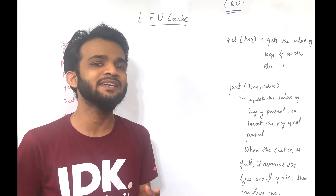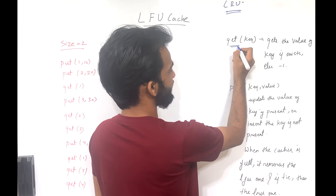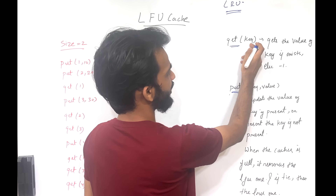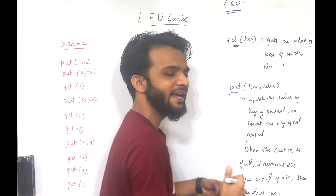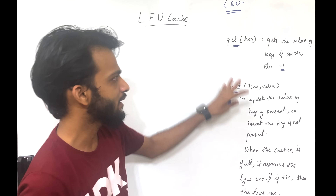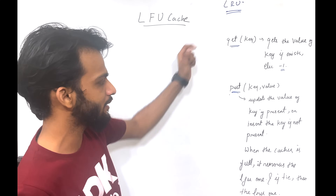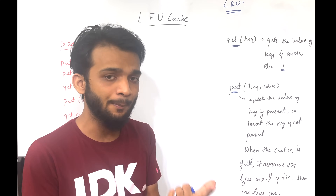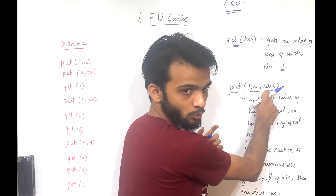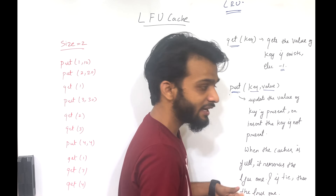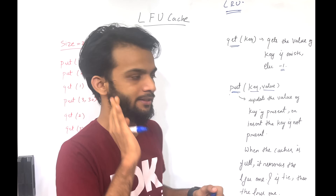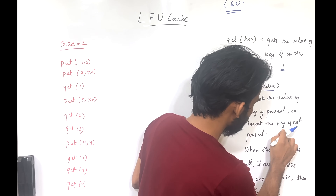So what is LFU Cache? The problem states that you have to design a data structure which gives you two functionalities: the get function and the put function. The get function says if you have a key it returns the value of that key if it exists in the data structure; if it doesn't exist it returns minus one. The put function takes a key and a value — it updates the value of the key if the key is already in your data structure.